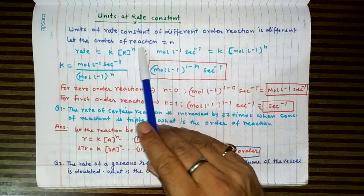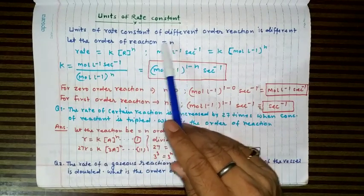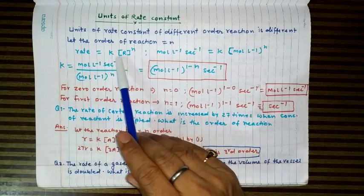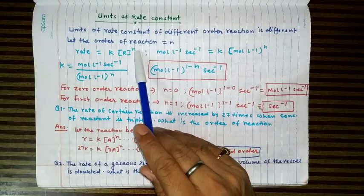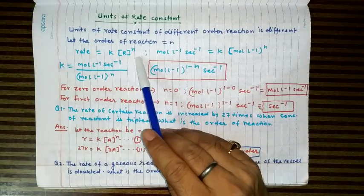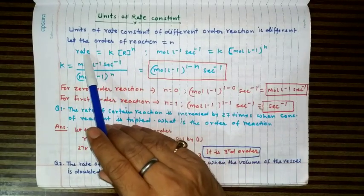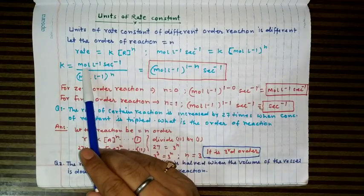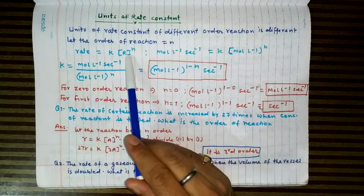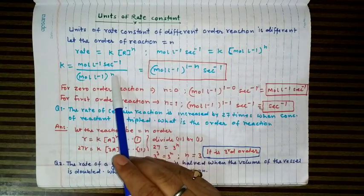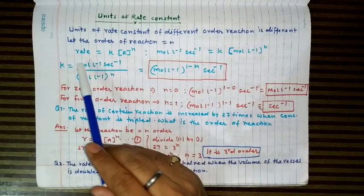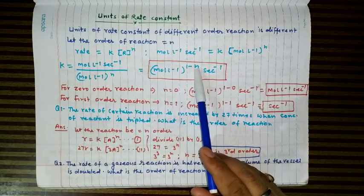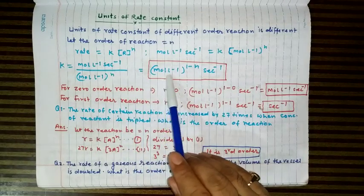Let the order of reaction be n. So the rate expression can be written as rate = k × [concentration]^n. Therefore k = rate / [concentration]^n. Rate is measured in mole per litre per second, and concentration is mole per litre raised to power n. This simplifies to mole per litre raised to power (1−n) per second.